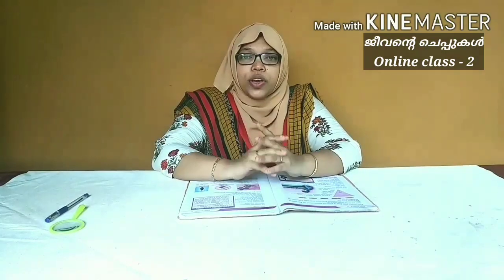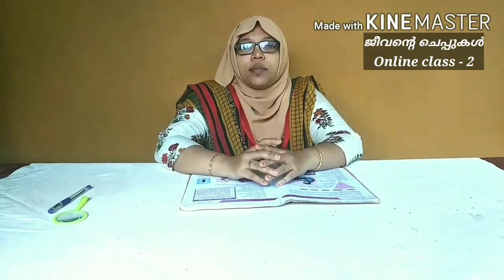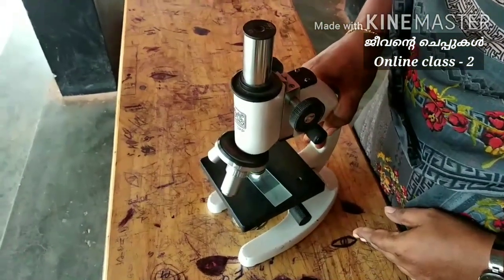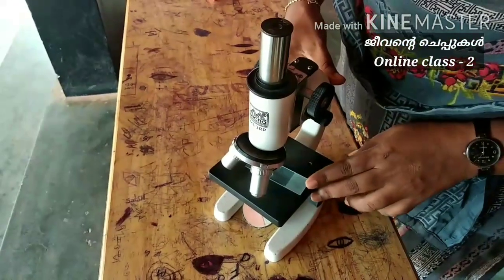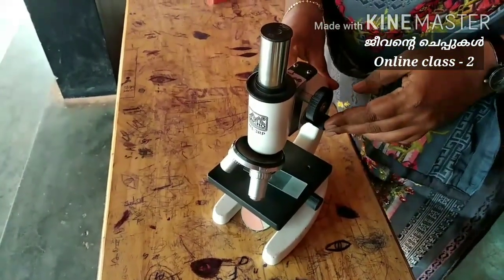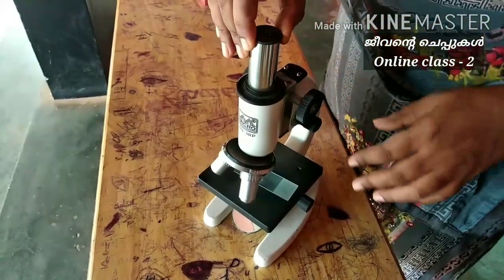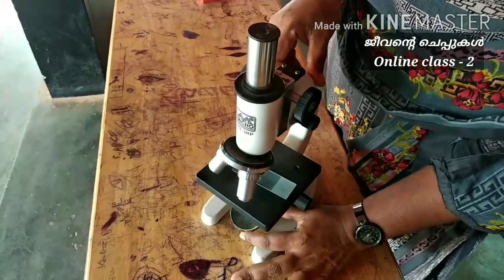I will show you the microscope in the next step. This is the compound microscope. We will show you the parts of this microscope, including the mirror.